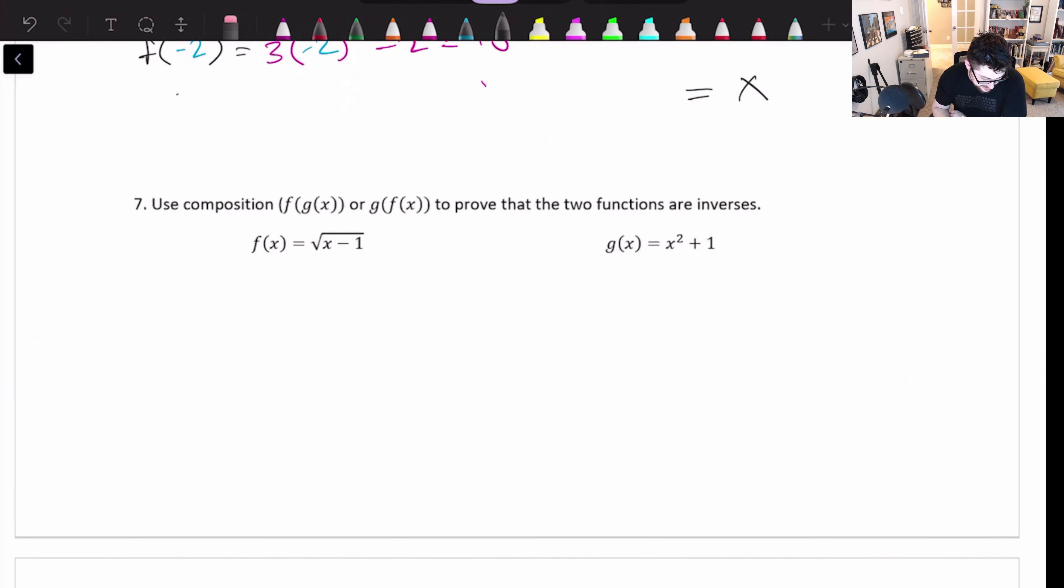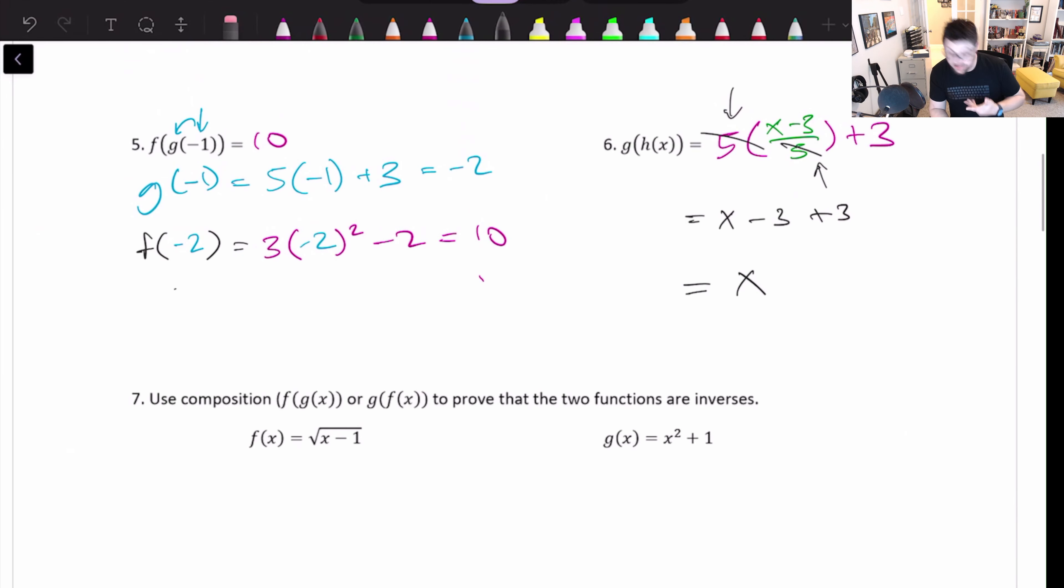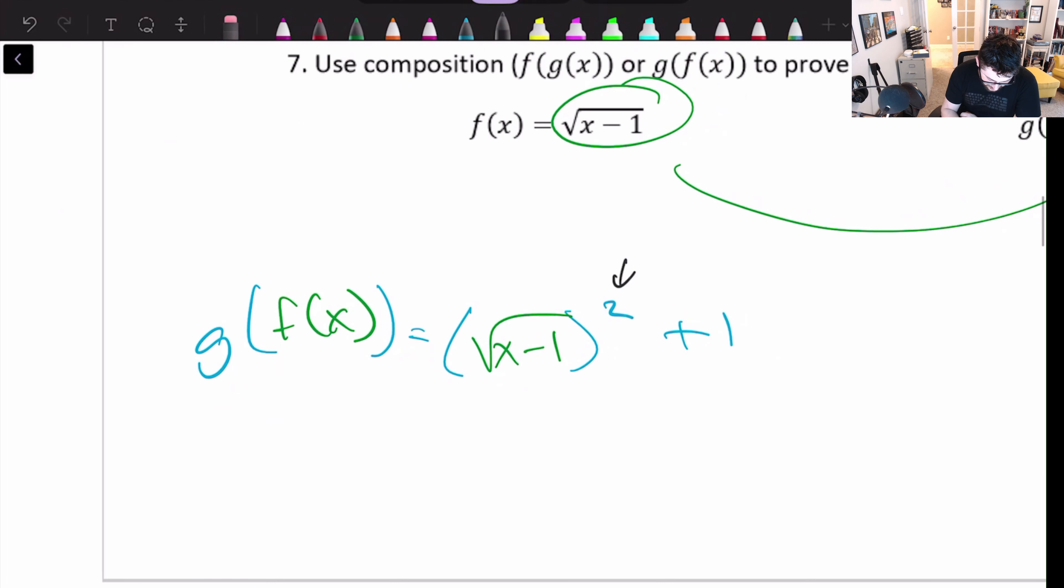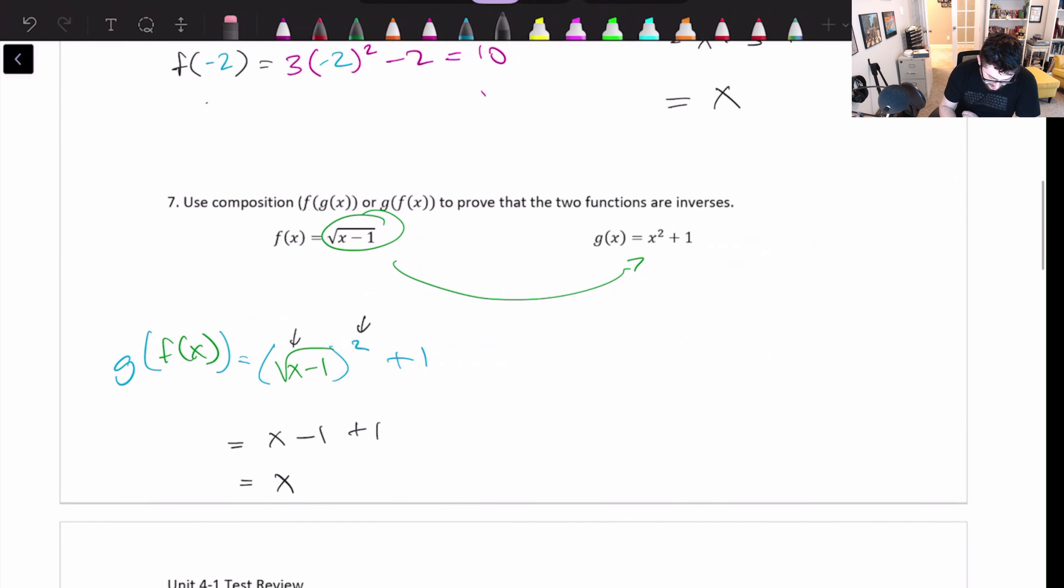So going on to this stuff, composition of functions, proving things are inverses. What we're doing here is we can just put one in the other. If it simplifies out to x, like problem six does, then we're good. So something like this, if I wanted to put this on the inside of here, what I would have is I would have x squared plus 1 on the outside and square root of x minus 1 on the inside. I'm essentially putting f of x inside g of x. If I simplify this out, well, I have a squared and a square root. Those would cancel. So I now have x minus 1 plus 1 minus 1 plus 1 is 0. So I have x. So yes, they are inverses.